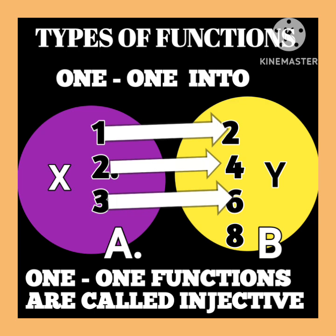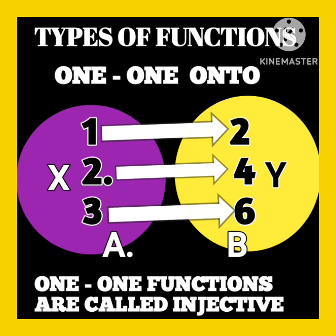This is a one-one into function. There is a one-to-one correspondence and one element is left in B. For one-one onto, the one-to-one correspondence is there but no element is left in B. So it is called onto — making it a one-one onto function.